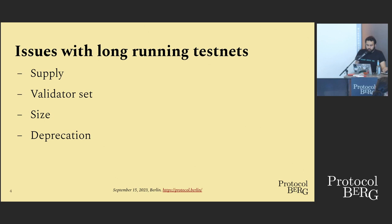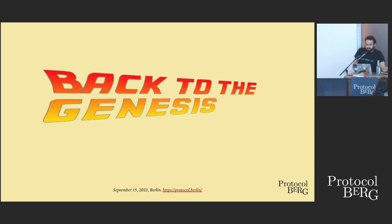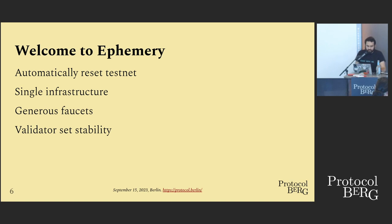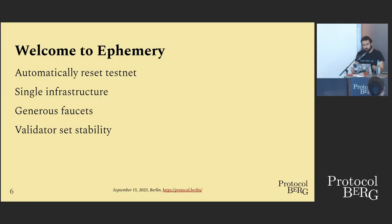We take this idea of testnets being ephemeral a bit further and enshrine it. We go back to genesis every week — right now Ephemery resets automatically and periodically with predetermined parameters. So instead of one testnet running for years, the network runs for one week and then goes back to genesis with a set of genesis validators. It's still a single testnet infrastructure — the same block explorers and everything point to the same network, it just gets bumped to a new iteration.